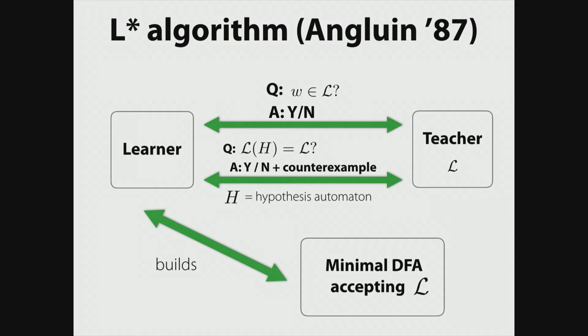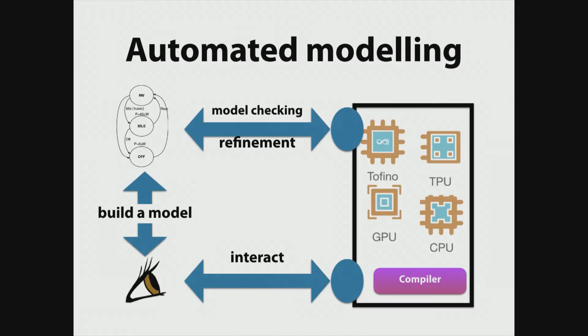Now, this whole schematic actually again goes back to some traditional research in formal language theory, namely to Dana Anglin in 87. And Dana Anglin has this seminal paper on an algorithm she calls L-star. And L-star is a black box algorithm like the one I showed you. But the black box, instead of having a system like a chip or a compiler, simply has a, what she calls a teacher that knows about a certain regular language L. And there is a learner that wants to build a model, namely a minimal automaton accepting this language. And this learner is going to interact with the teacher by asking very simple questions, namely, is a word in the language, and the answer is either yes or no from the teacher.